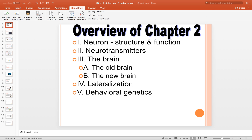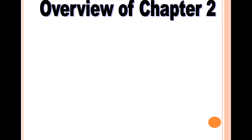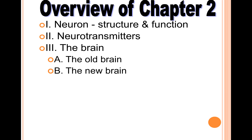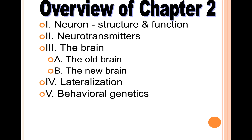Today we're going to look at the first part of the biology chapter. In chapter two, we'll start with a discussion of the neuron or nerve cell that makes up your brain, spinal cord, and all of the peripheral nerves in your body. We'll talk about neurotransmitters — chemicals in the nervous system that control everything from conscious thought to voluntary movement. We'll cover the brain, discussing older parts that evolved first and control more primitive functions, then move to the newer brain that controls higher functions such as intellectual control. Lateralization and behavioral genetics are also covered in your module.